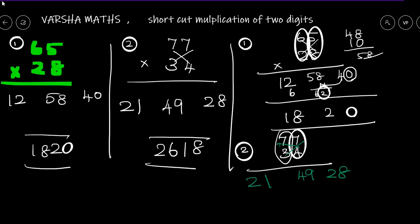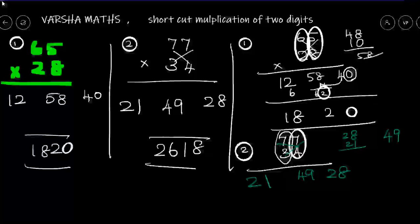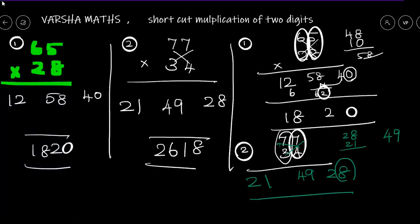Okay? 7, 4 are 28. 7, 3 are 21. So, 49. Now, what do we do? The answer is ones digit. How do we do this?